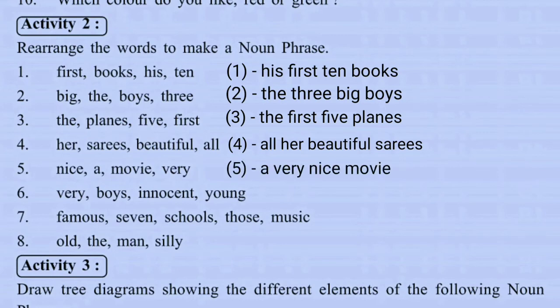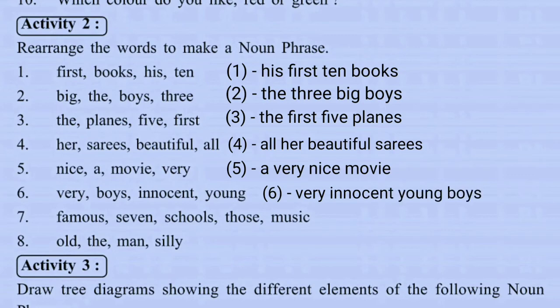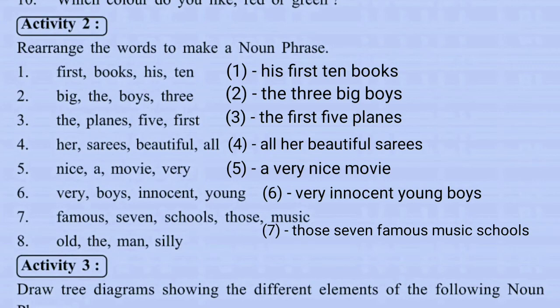For 'very', 'bias', 'innocent', 'young' — the head noun is 'bias', so the noun phrase is: very innocent young bias. For 'famous', 'seven', 'schools', 'those', 'music' — the head noun is 'schools', so the noun phrase is: those seven famous music schools. For 'old', 'the', 'man', 'silly' — the head noun is 'man', so we put pre-modifiers before the head noun: the silly old man.